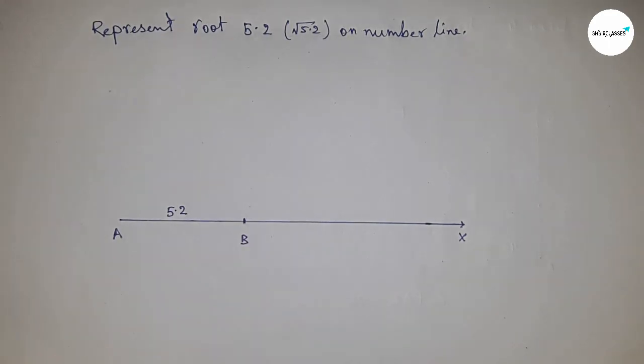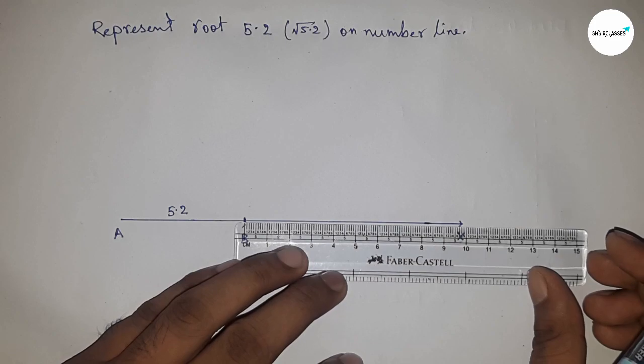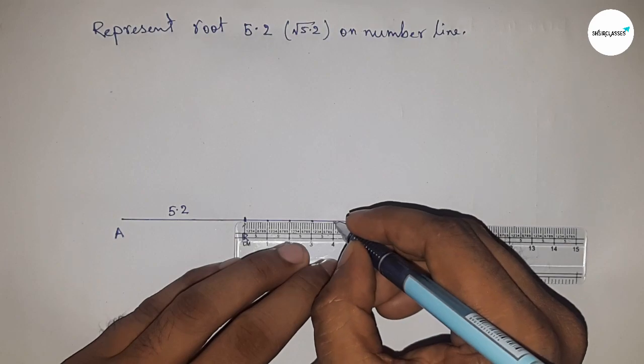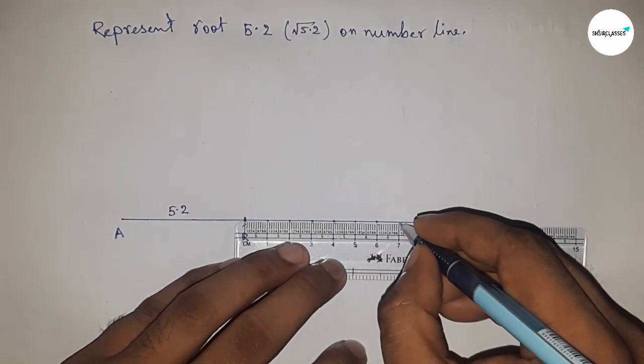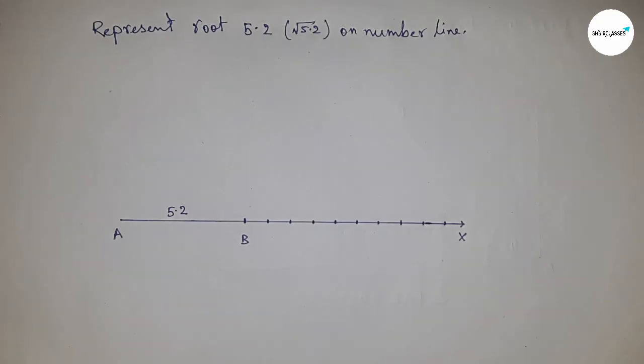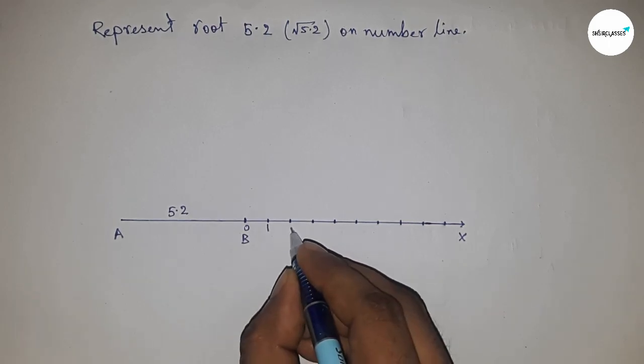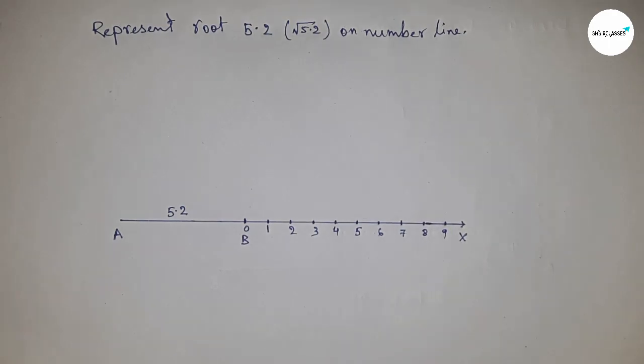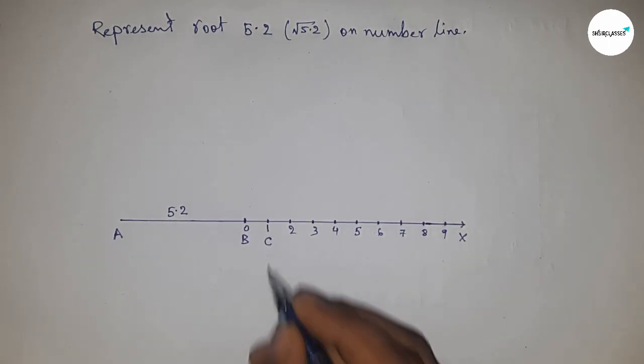Now mark the numbers on the line from B to X using a scale: 0, 1, 2, 3, 4, 5, 6, and so on. Mark point C at 1.